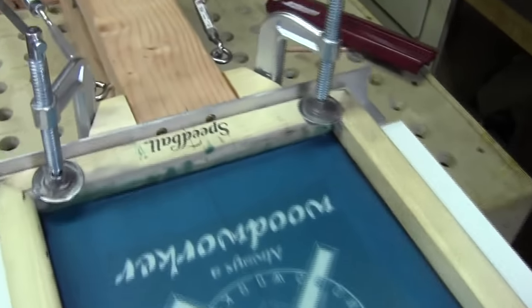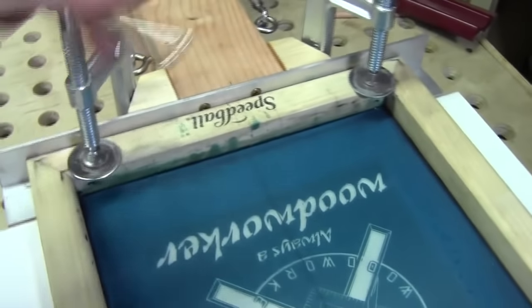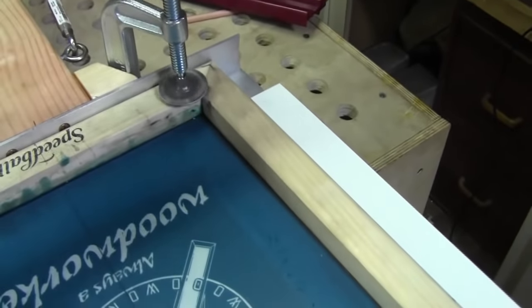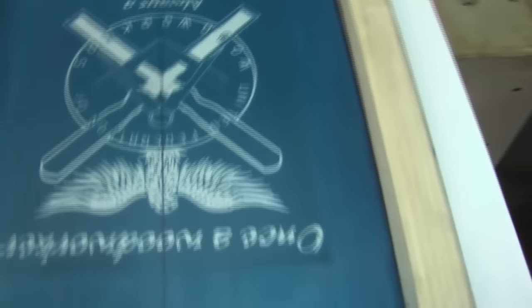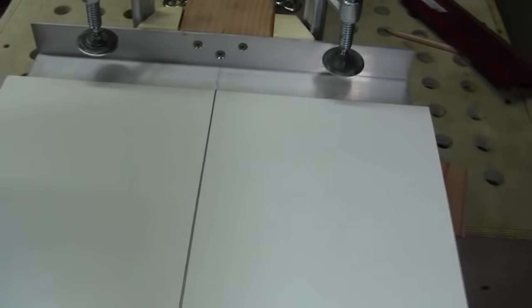So with the printing press as I said, the C-clamps hold the screen in place and what I can do is I've got that center line on the platen.